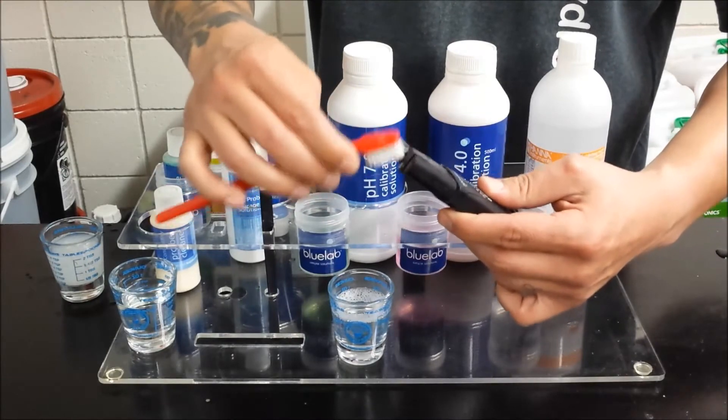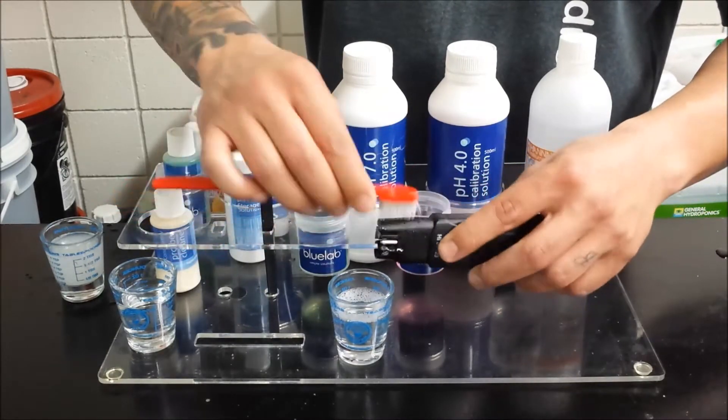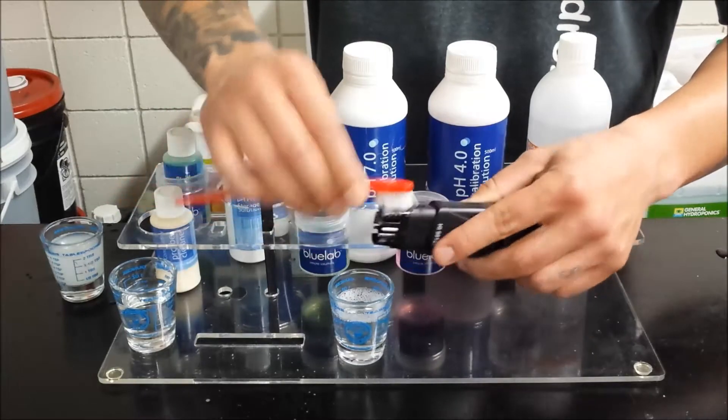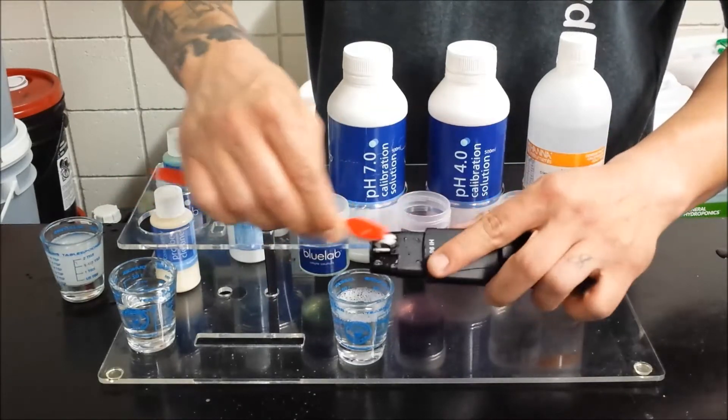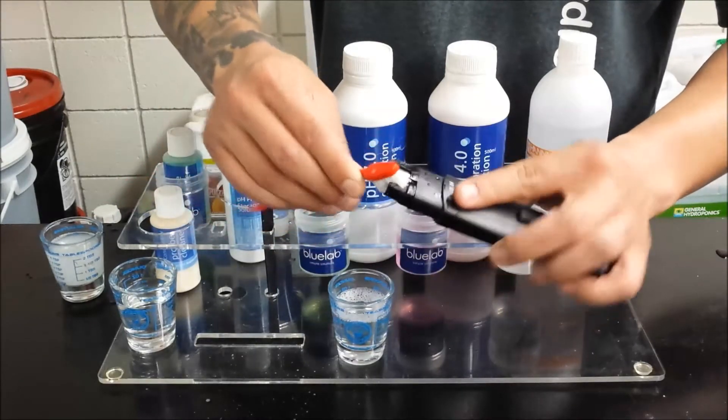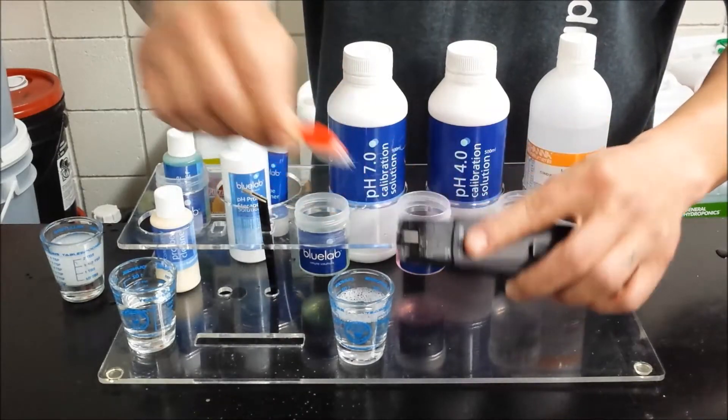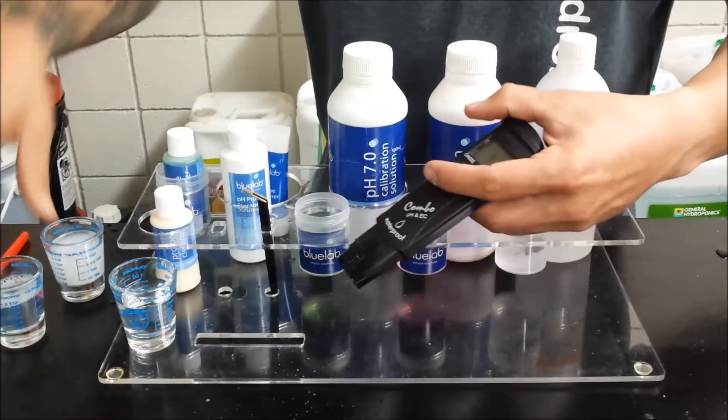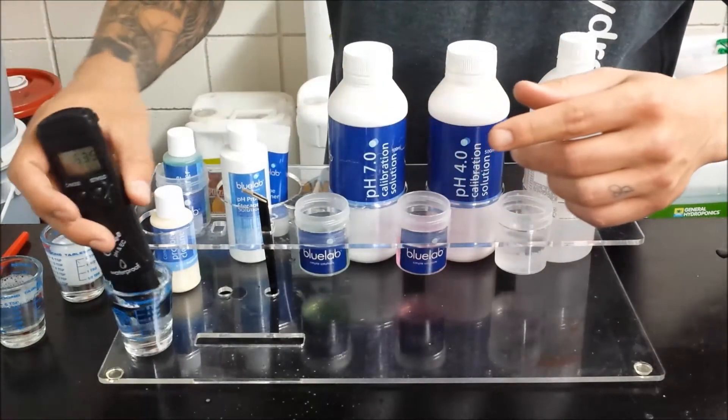You can also use the bristles. You want to scrub any old nutrient residue off of the PPM side. Make sure it's nice and thoroughly clean. Go ahead and give it a good rinse in water.